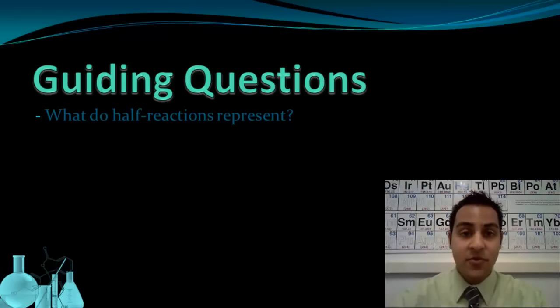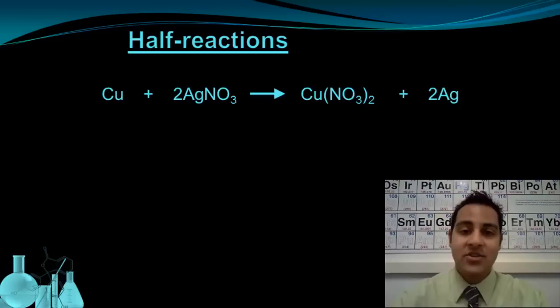Half reactions are going to be useful for when we talk about balancing redox reactions, as well as when we talk about batteries or electrochemical cells. So let's see what half reactions are. Here we have a redox reaction: copper plus silver nitrate gives me copper 2 nitrate and silver. This is a single replacement reaction with the copper replacing the silver in the nitrate. I can identify this as redox because all single replacement reactions are redox reactions.